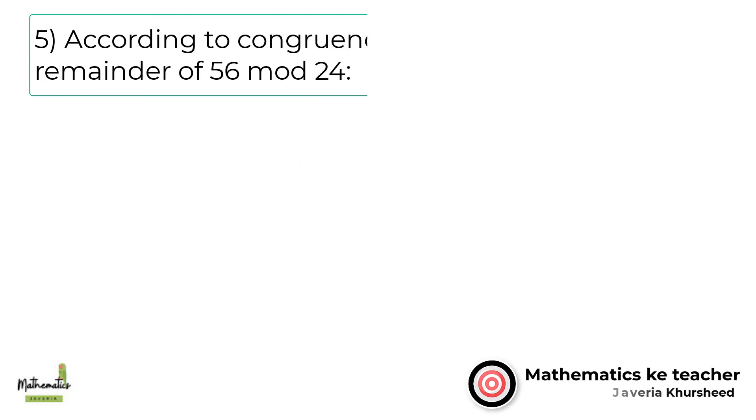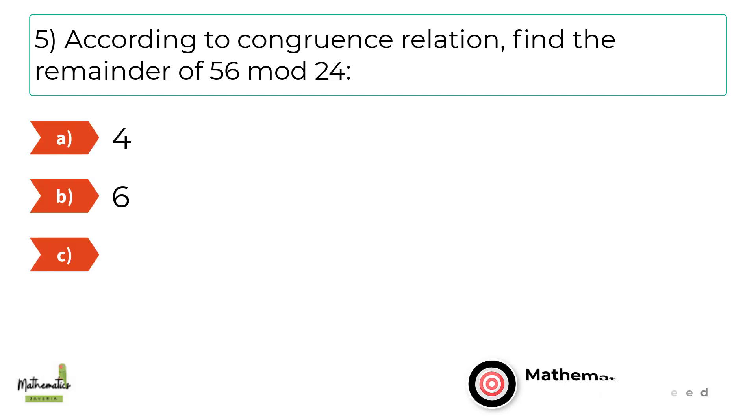Number 5. According to congruence relation, find the remainder of 56 mod 24. A, 4. B, 6. C, 8. D, 12.